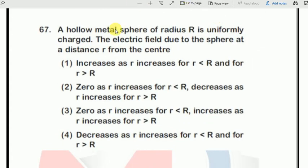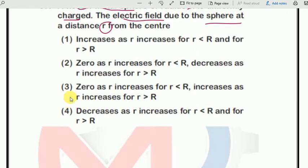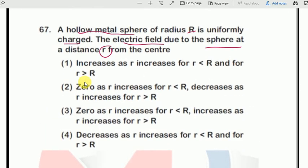Next question: a hollow metal sphere of radius R is uniformly charged. We need to find the electric field due to the sphere at a small distance r from the center. First, do some reverse engineering — this is from chapter 1, Gauss theorem and its applications. Remember the concept of the hollow metal sphere.